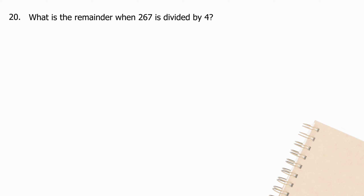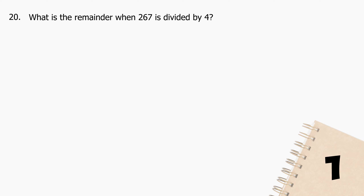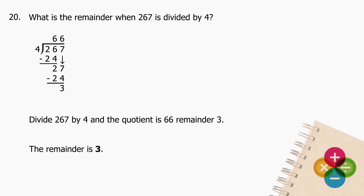Question 20: What is the remainder when 267 is divided by 4? Divide 267 by 4 — the quotient is 66 remainder 3. The remainder is 3.